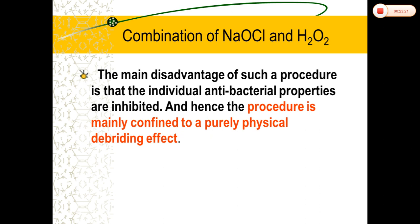The combination of sodium hypochlorite and hydrogen peroxide was introduced by Svec and Harrison. A reducing agent and an oxidizing agent together produce a greater cleansing effect and effervescence. This combination is strongly recommended for irrigating teeth that have been left open for drainage. It is effective in dislodging calcifications as well as debris. However, antibacterial properties are inhibited, so it is purely a physical debriding effect. This combination can be used when an access cavity has been left open and the temporary restoration has been lost — it helps remove the debris and particles blocking the access cavity, but cannot serve as an effective irrigant during cleaning and shaping.